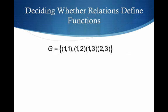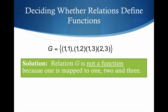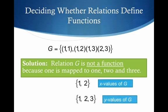What about g? Is this a function? I see one go to one, one go to two, one go to three. So one in the first component gets mapped to one, two, and three. Thus, it is not a function. You can see with the arrows, one is going to three different outputs.